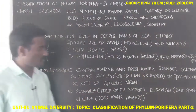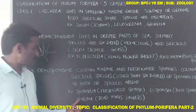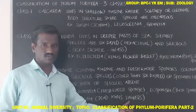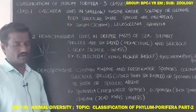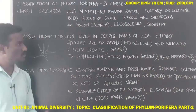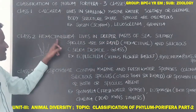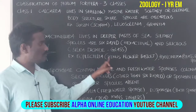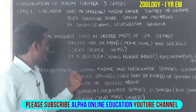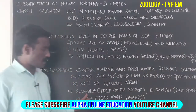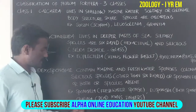Examples of Demospongiae: Spongilla is a freshwater sponge — common name 'Fresh Water Sponge,' scientific name Spongilla. Euspongia is the bath sponge. Chalena is commonly known as Dead Man's Fingers. Students should note that both common names and scientific names are important.